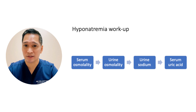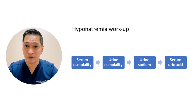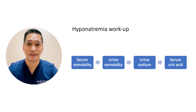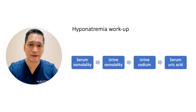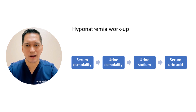By the end of this video, you will gain an understanding of the following essential points. Serum osmolality plays a crucial role in identifying whether other osmols contribute to hypernatremia. Urine osmolality is vital for determining the activation of ADH. Urine sodium levels are essential to assessing whether the renin-angiotensin-aldosterone system, RAS, is activated, and if so, whether ADH secretion is appropriate or inappropriate. Serum uric acid levels are particularly valuable in differentiating between SIADH and other causes of hypernatremia.